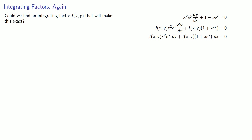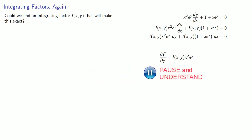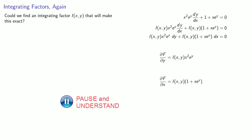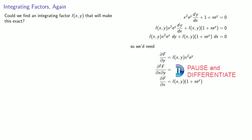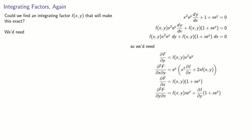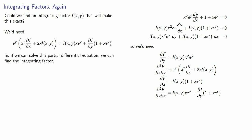If this is exact, the coefficient of dy is going to be a partial derivative of some function f with respect to y, and the coefficient of dx is going to be the partial derivative with respect to x. For any hope of this to work, the mixed partial derivatives must be equal. So we differentiate each coefficient by the other variable and set them equal, giving us a partial differential equation that we'd need to solve in order to find the integrating factor.